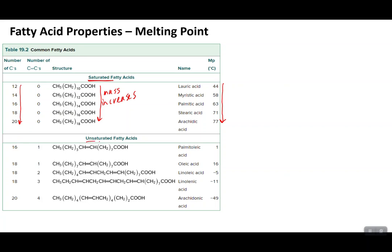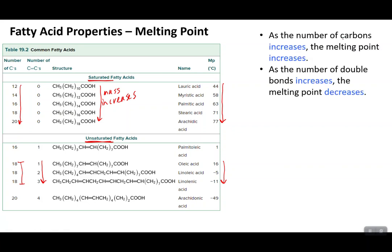Now let's compare to unsaturated fatty acids, which introduce carbon-carbon double bonds. Considering unsaturated fatty acids that all have 18 carbons but differ in the number of double bonds: as the number of carbon-carbon double bonds increases, the melting point actually decreases. So more double bonds means a lower melting point. As a summary: more carbons increases the melting point, while more double bonds decreases the melting point.